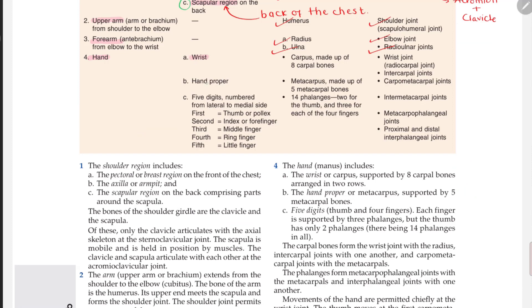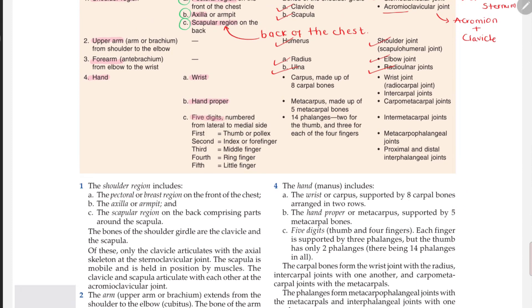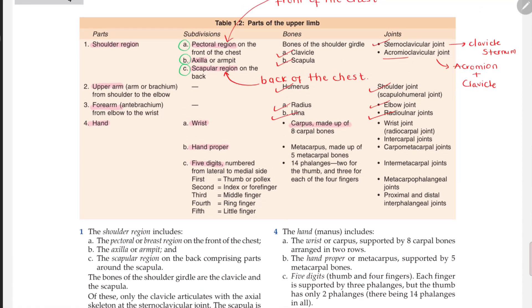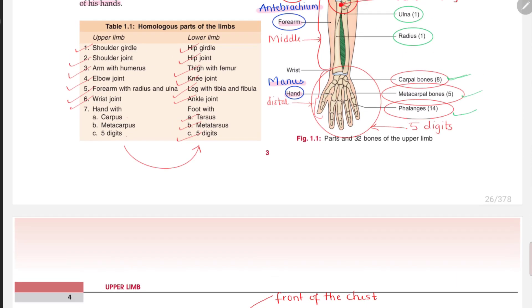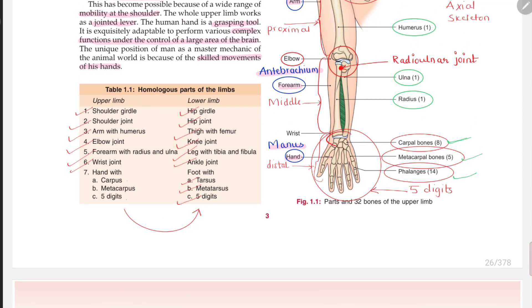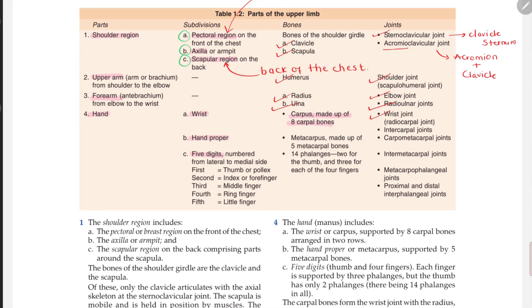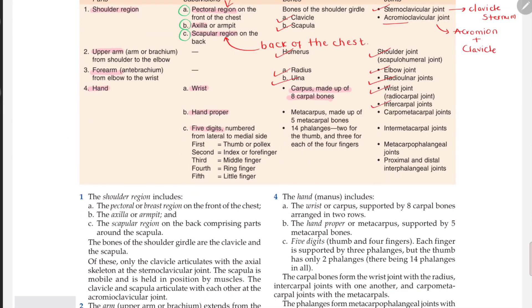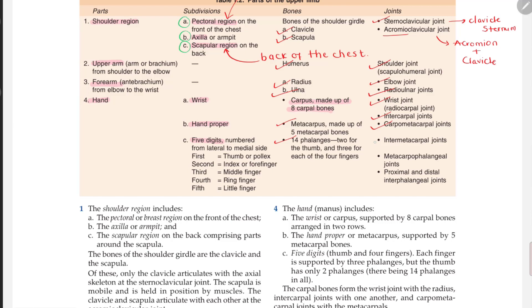The next section is the hand, which consists of the wrist, the entire hand, and the five digits. The wrist is made up of eight carpal bones, leading to the wrist joint. Then we have intercarpal joints, carpometacarpal joints for the metacarpus and phalanges, intermetacarpal joints, metacarpophalangeal joints, and proximal and distal interphalangeal joints.